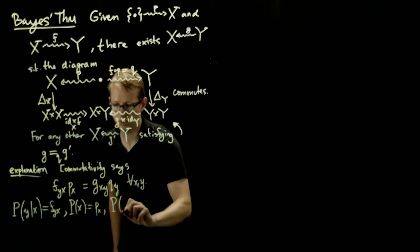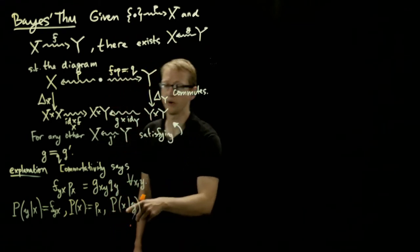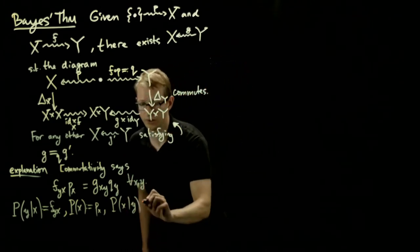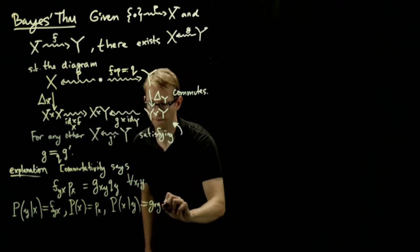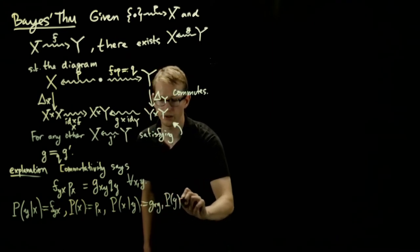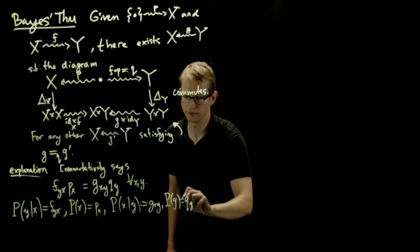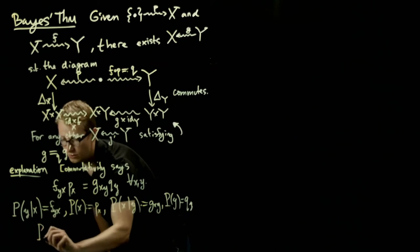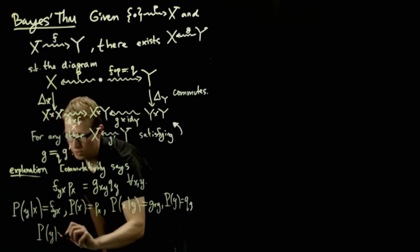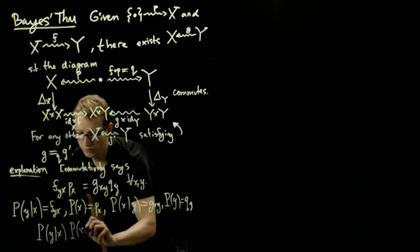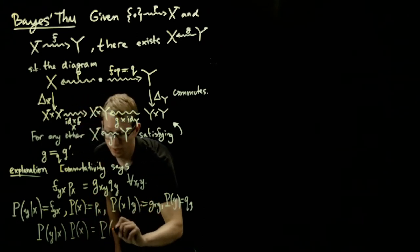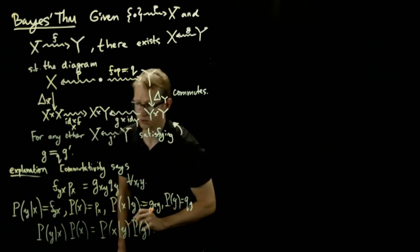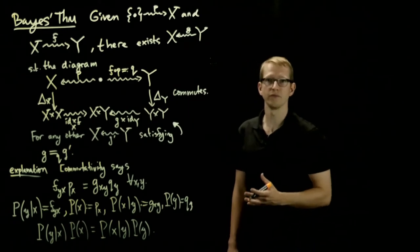The conditional probability of x given y, now this is going in the opposite direction, it says if you give me y, what's the probability of x occurring? That's exactly g(x,y). And finally, the probability of y occurring is q(y). And so if we write down these expressions, commutativity of this diagram says nothing but the probability of x given y times the probability of x is equal to the probability of y, of x given y times the probability of y, which is perhaps a slightly more familiar form of Bayes' theorem.